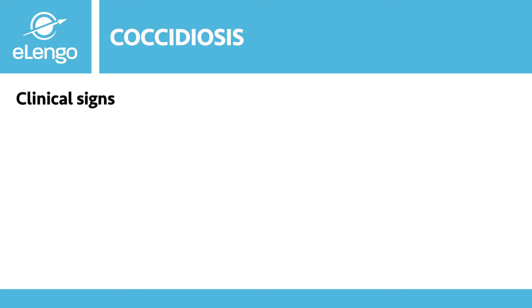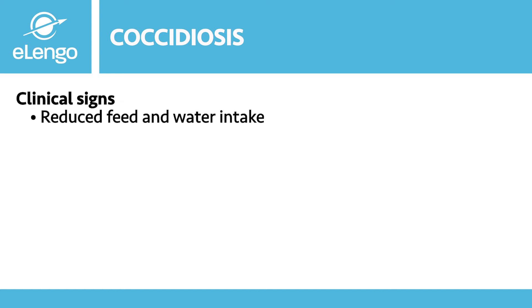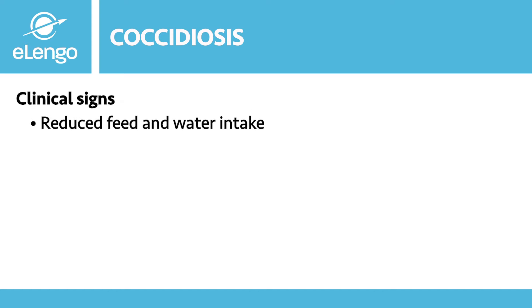What are the clinical signs of coccidiosis, or how do you as a farmer know that your flock is infected? One of the first signs you're going to observe is reduced feed and water consumption by the flock. The birds will appear to be less active and will often go off on their own.